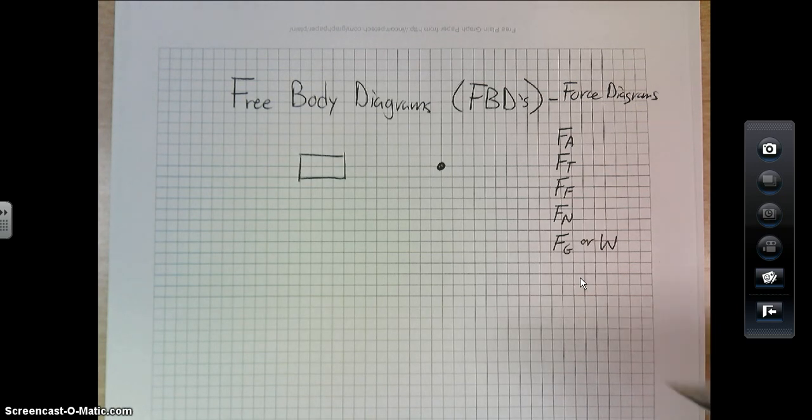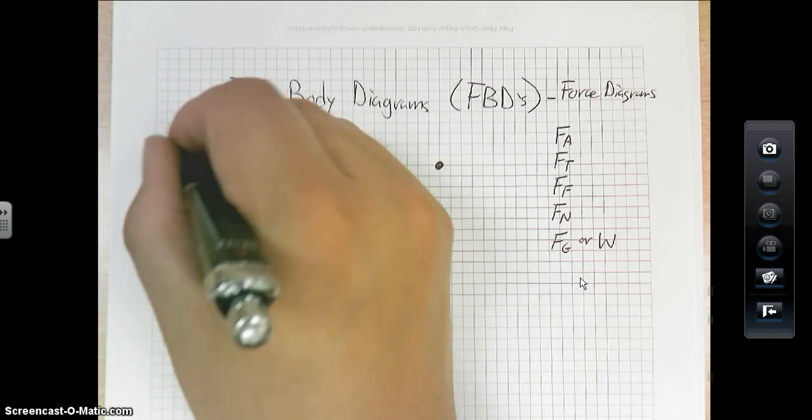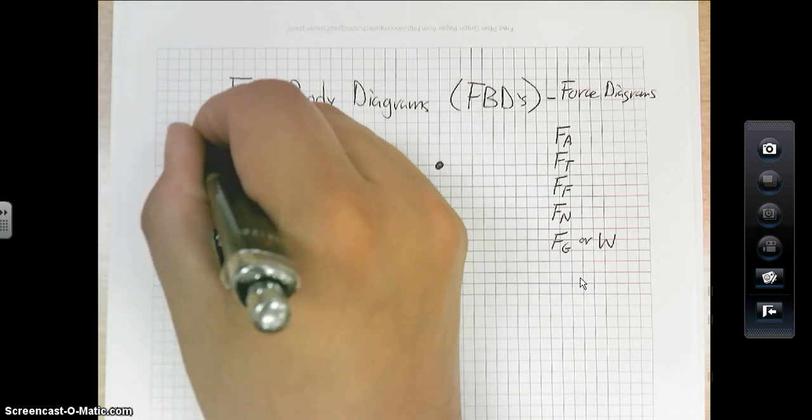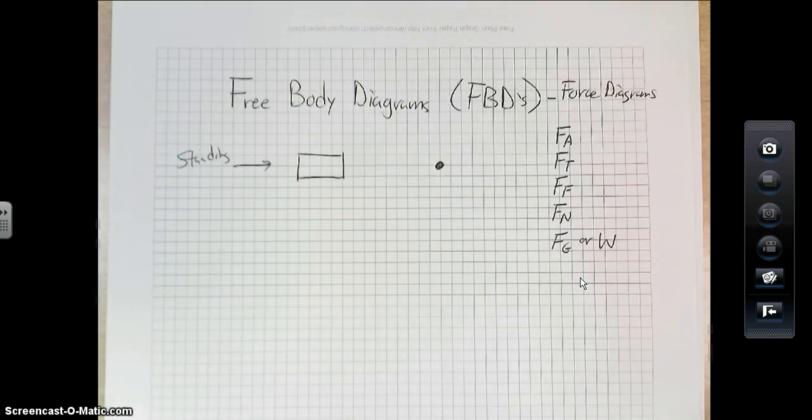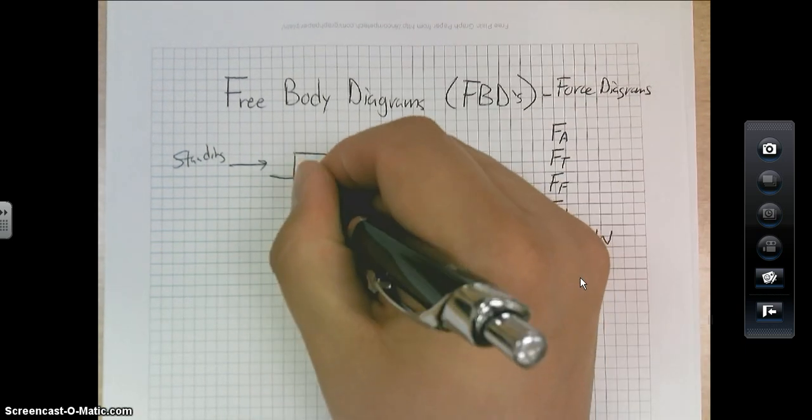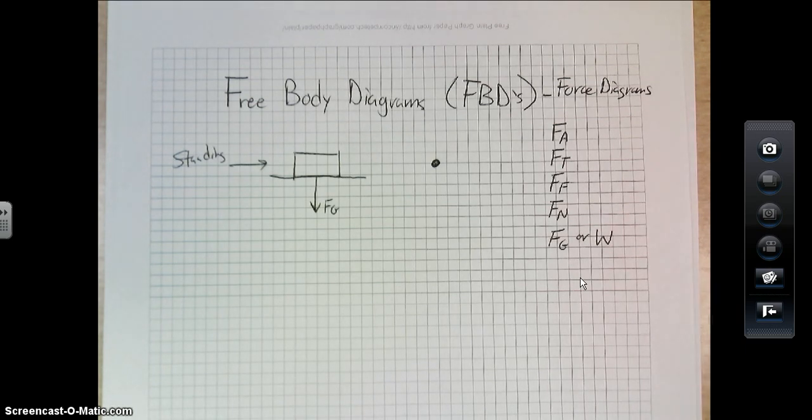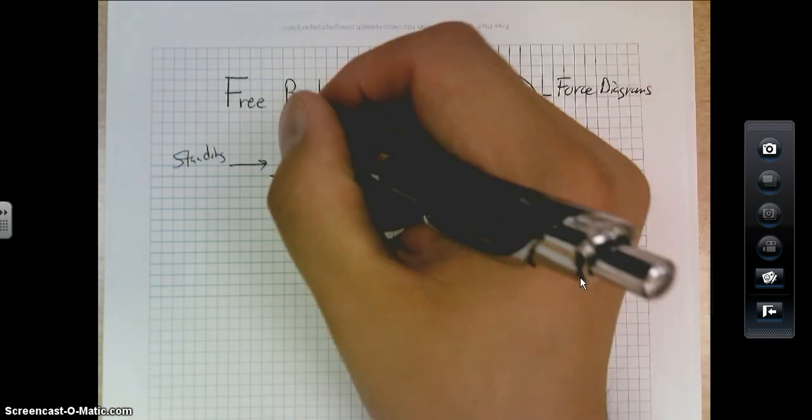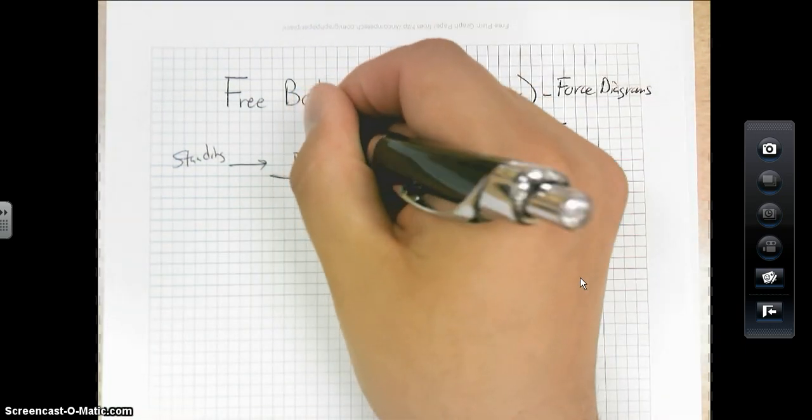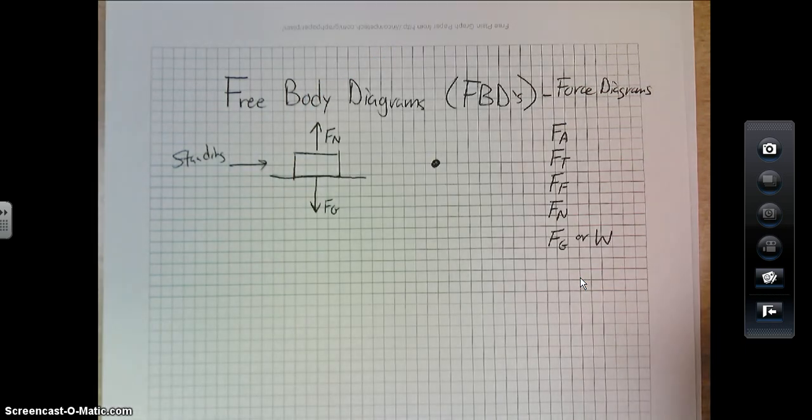So what these diagrams are is, let's just say you're standing on the ground. So if this is just somebody standing, the forces that are acting on them, as long as you're standing on the floor, you might have the force of gravity. Gravity always works down towards the center of the earth. And then we might have the normal force, which always acts perpendicular to the surface.